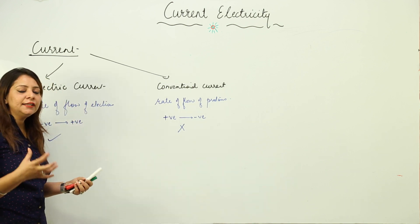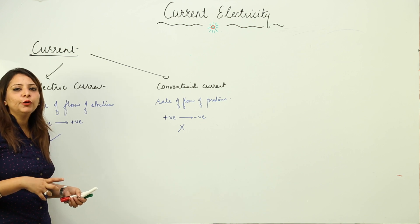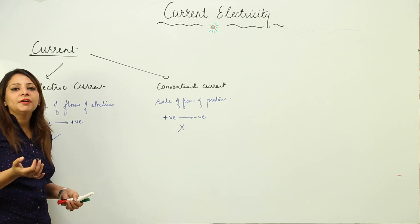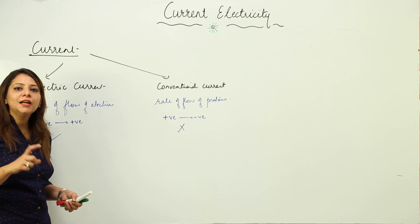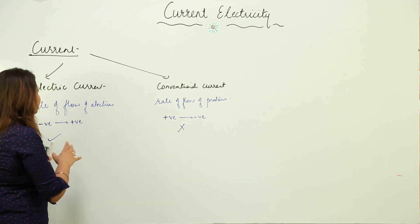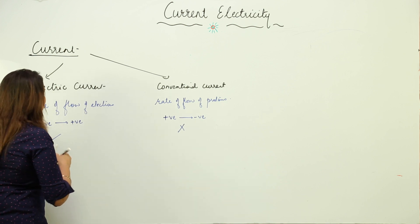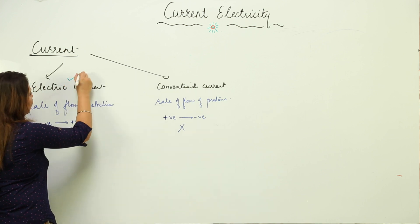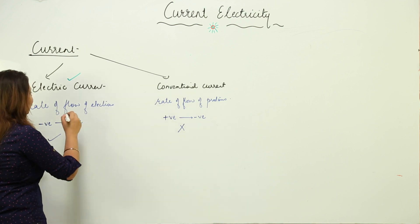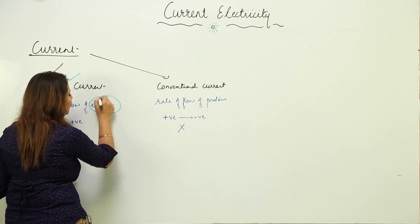Electric current is practically important; conventional current is not practically important. If we connect a battery, we say that conventionally the current flows from positive to negative in the external circuit, but in the internal circuit, the current flows from negative to the positive terminal. So electric current is what has practical importance, and we are going to consider this one only.